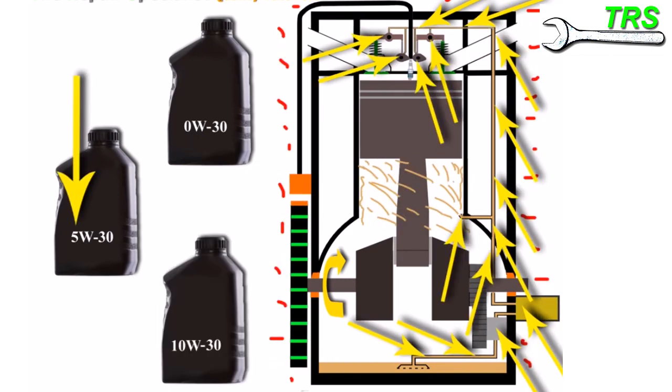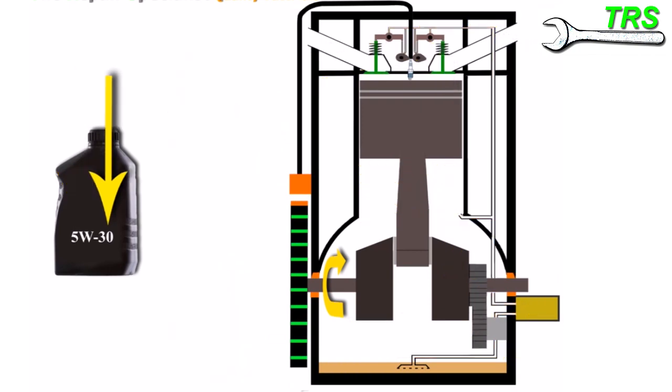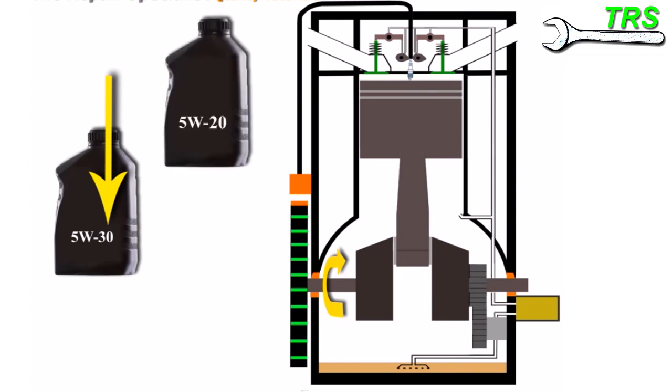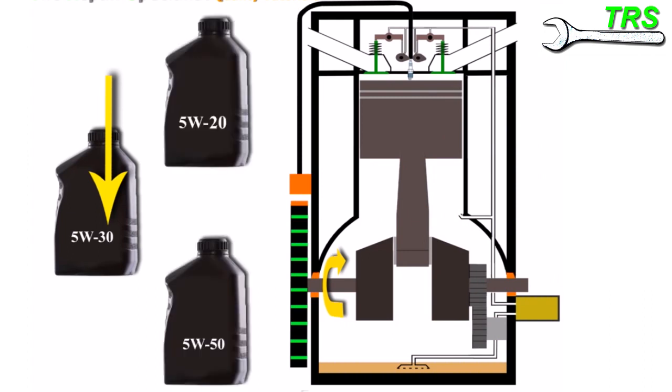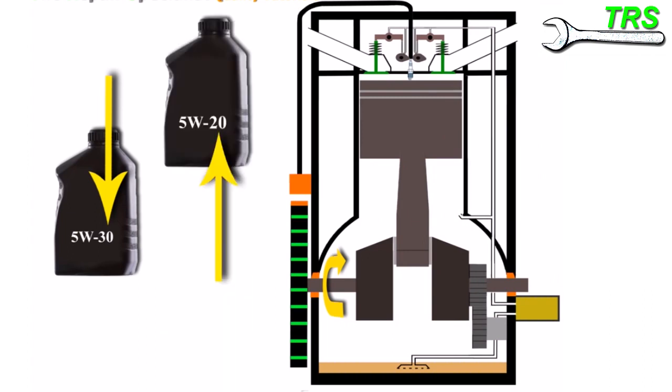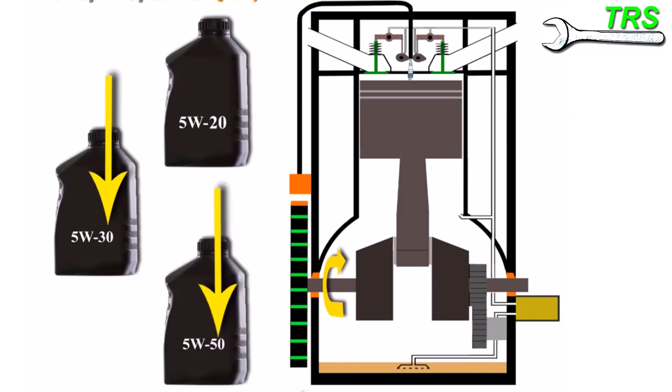Okay, so we've looked at what happens if the first number is below or above recommendations. Now let's have a look what happens if the last number is above or below recommendations. So I'll just pluck out a couple of examples again to make a point, and we've got a 5W-20 here and we've got a 5W-50.